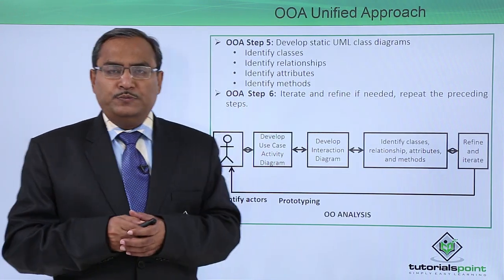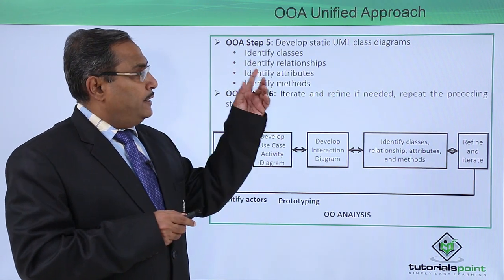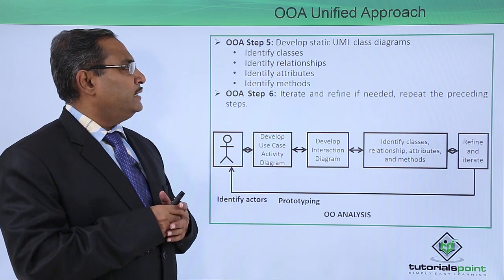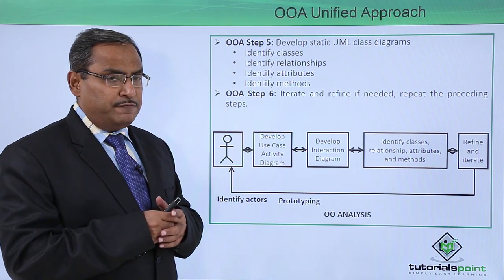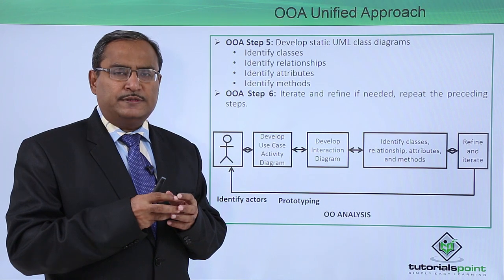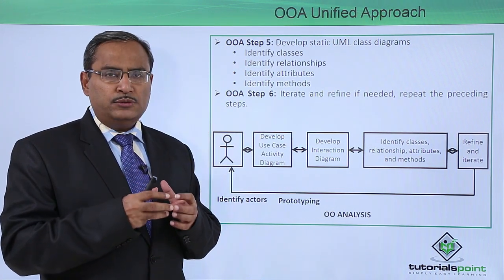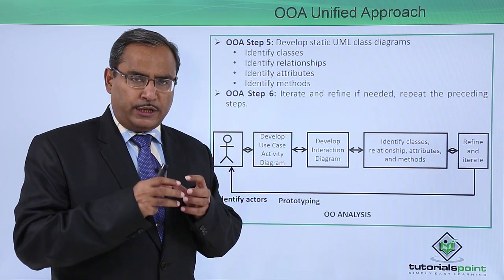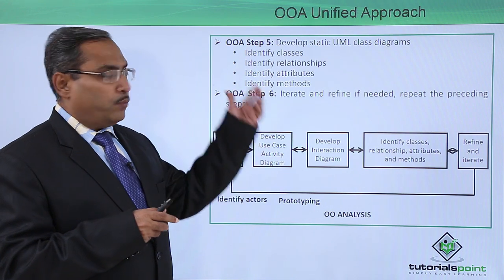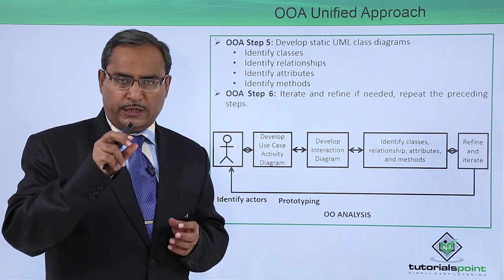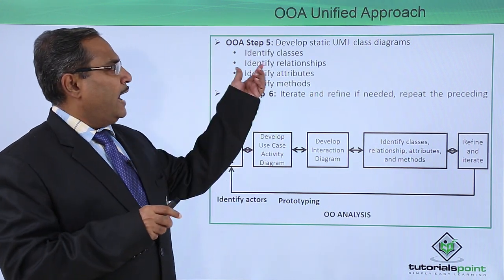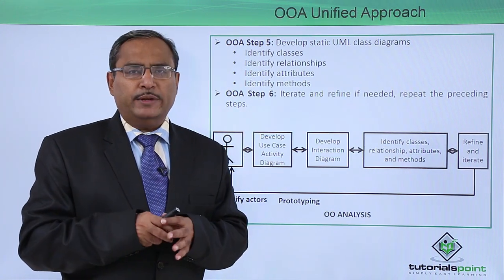OOA Step 5: Develop static UML Class Diagrams. Identify the classes, identify relationships, identify attributes, and identify the respective methods. A class consists of attributes that hold values and methods that denote the permitted operations on those attributes. Classes should be named with proper nomenclature so that the purpose of each class is clear, and the relationships between classes should also be identified.